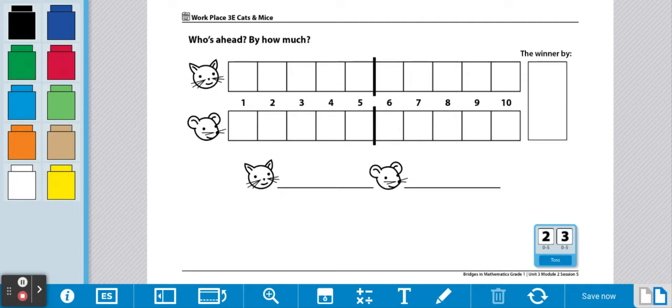Here's your directions for workplace cats and mice. What you'll need are Unifix cubes, a game board, and two dice.